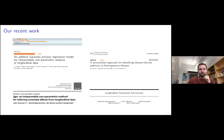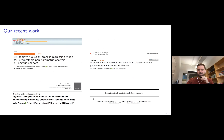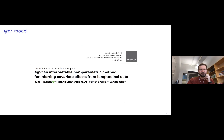What we have done in the past is summarized here. Today I will focus on two relatively recent papers: the first being the LCPR method, and the second a method called the longitudinal variational autoencoder, which will be appearing at AISTATS later this year. I will start with the LCPR method.